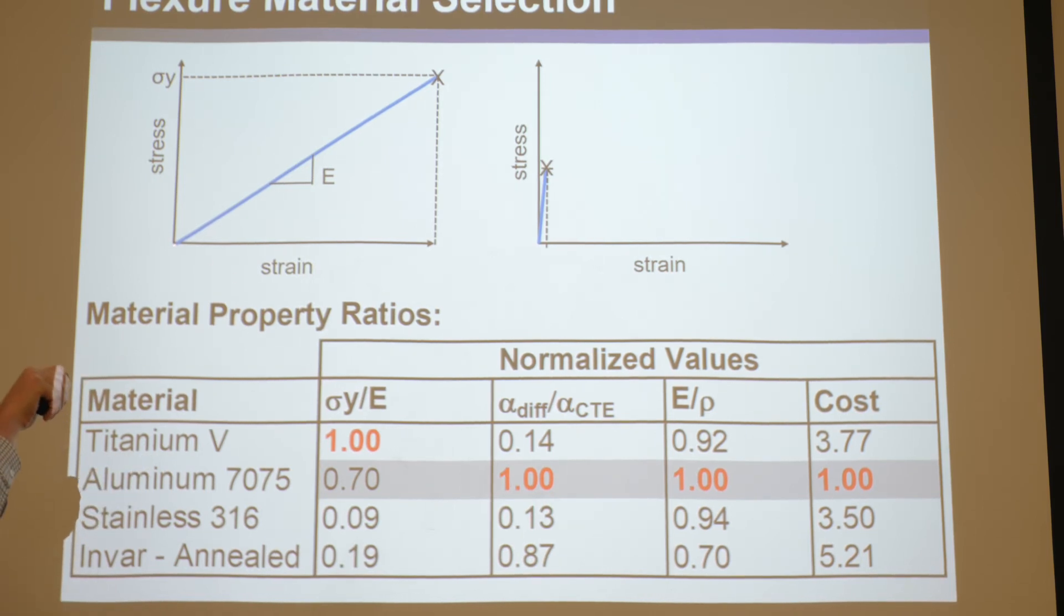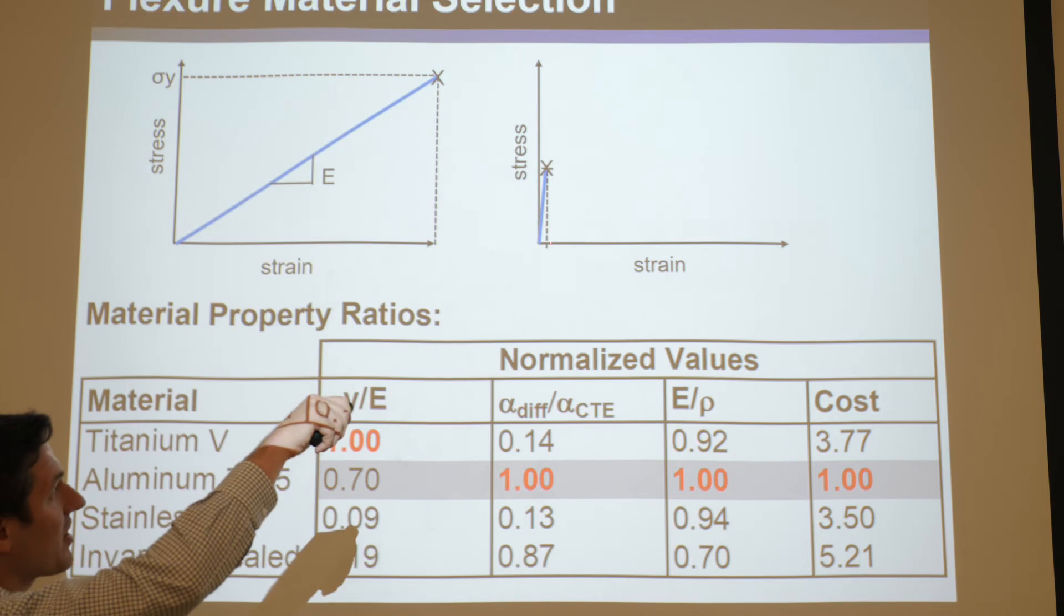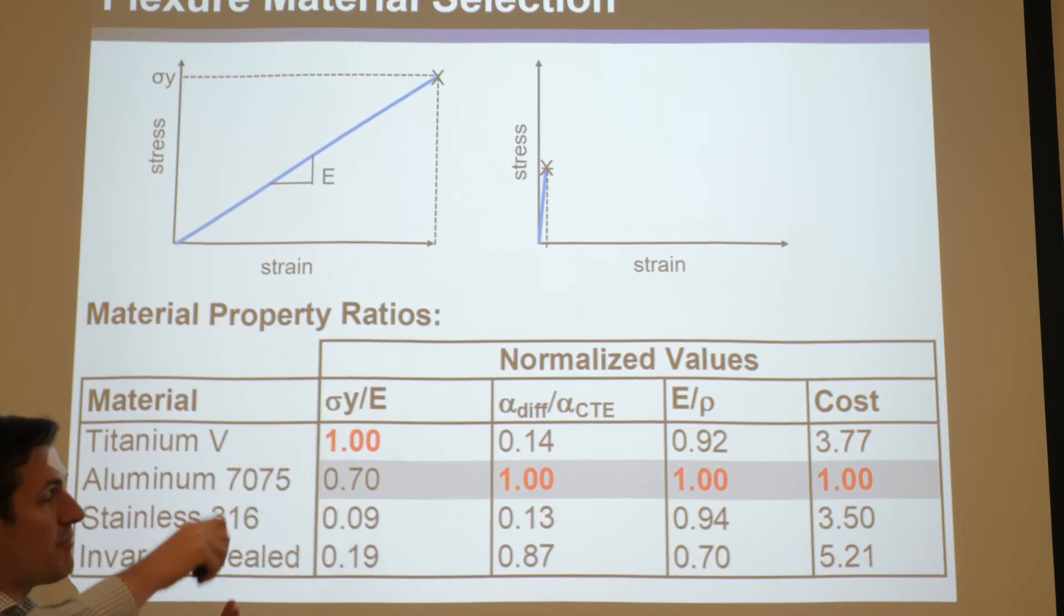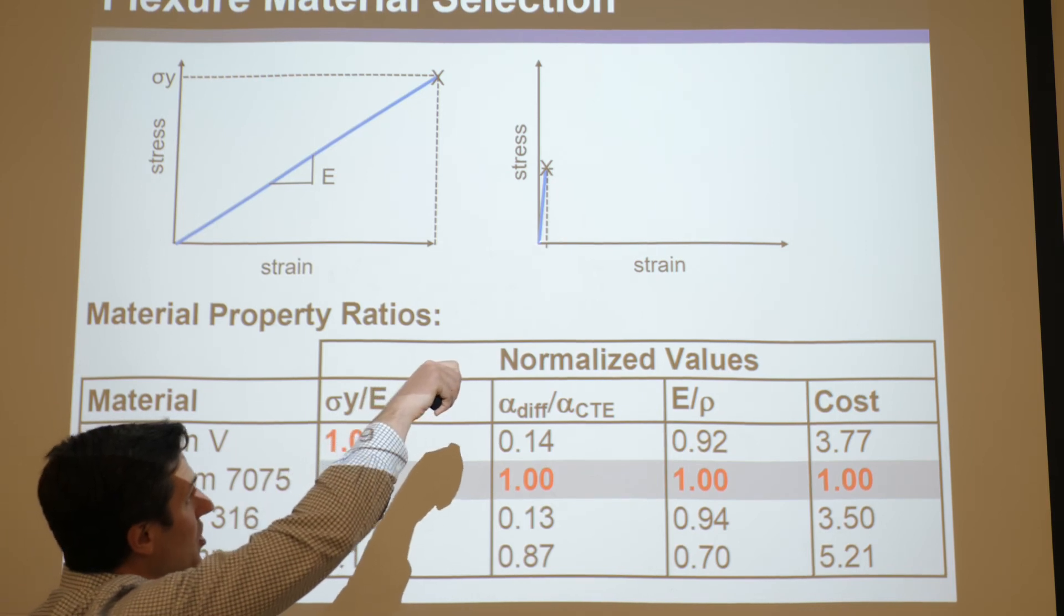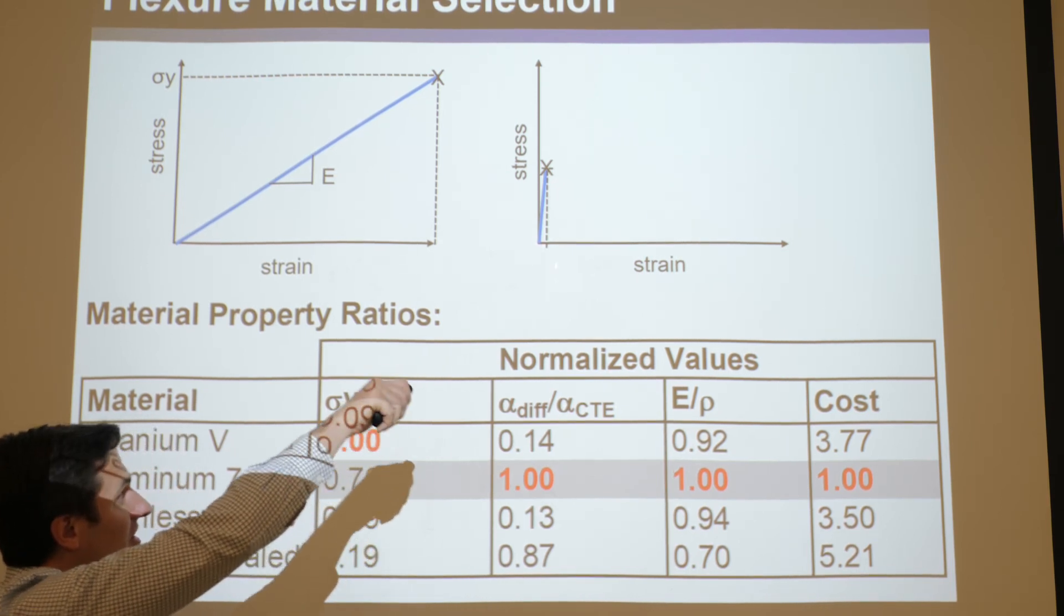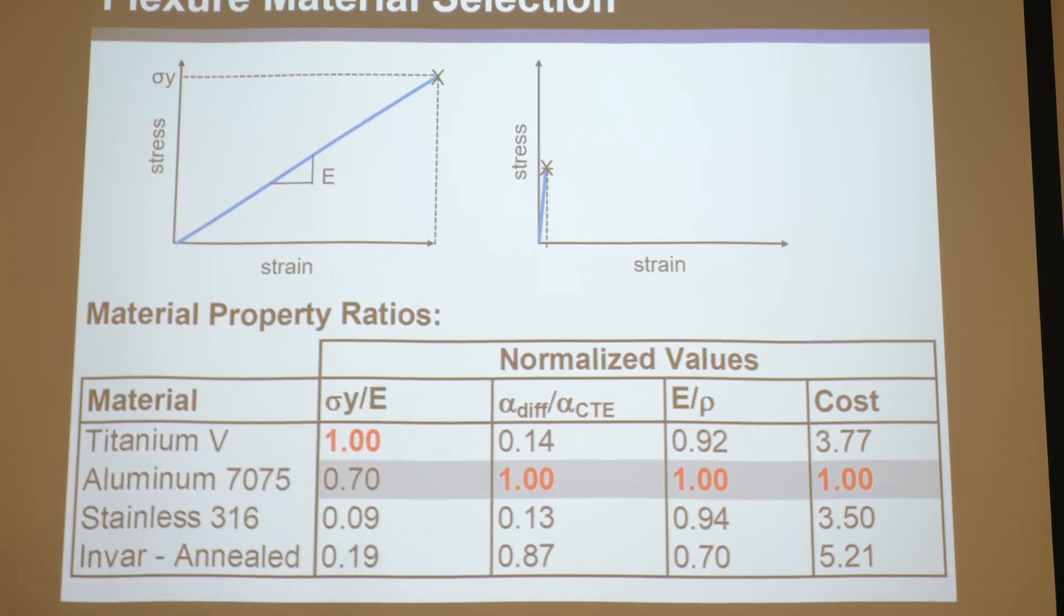Because think about it, if you have a large yield strength but a small E, small modulus, then think about it, before anything breaks you'll be able to deform over this entire strain range. But if you have a low yield strength, if it breaks quickly and it's got a high stiff modulus, which is often the case for ceramics and stuff, you don't get much range at all. It'll just move a little bit and pow, it'll break and you'll be done. So if you care about range, you care about this, and you pick the largest one.